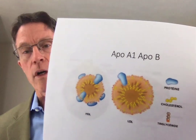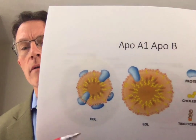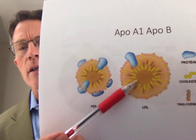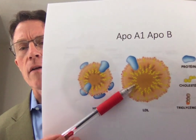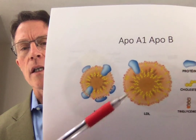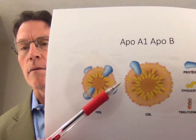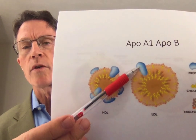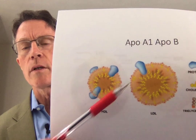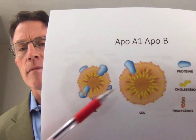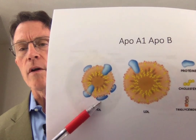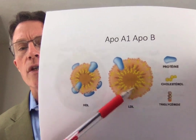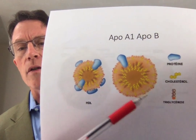This is a picture of an HDL particle and an LDL particle. The standard saying is that the only difference between these two is the protein content. LDL particles are 25% or less protein, and HDL particles are 50% or more protein. The other components are cholesterol and triglycerides.